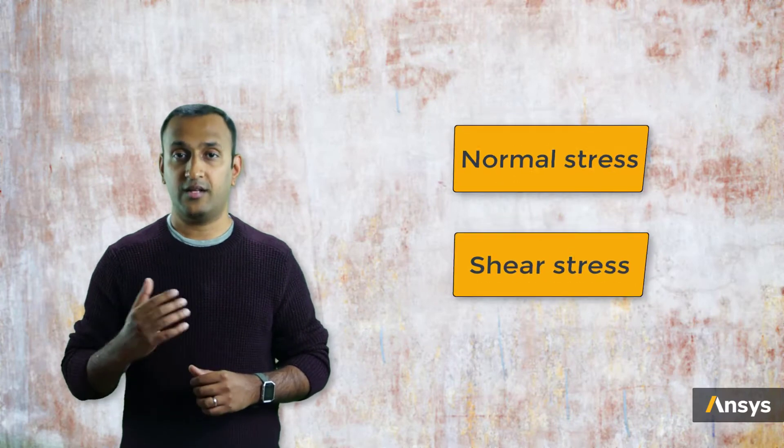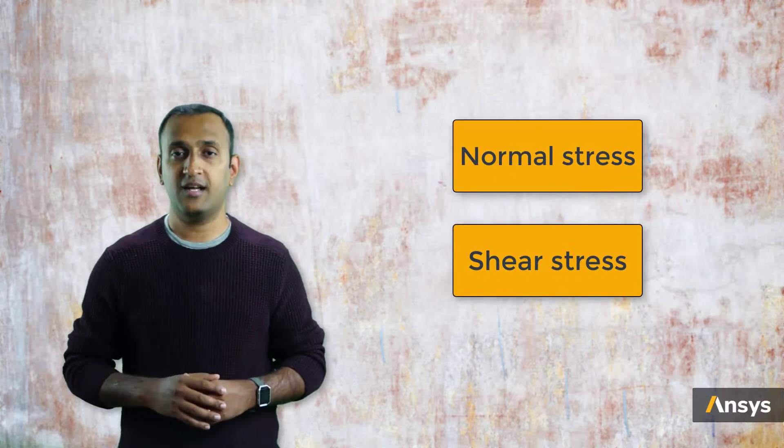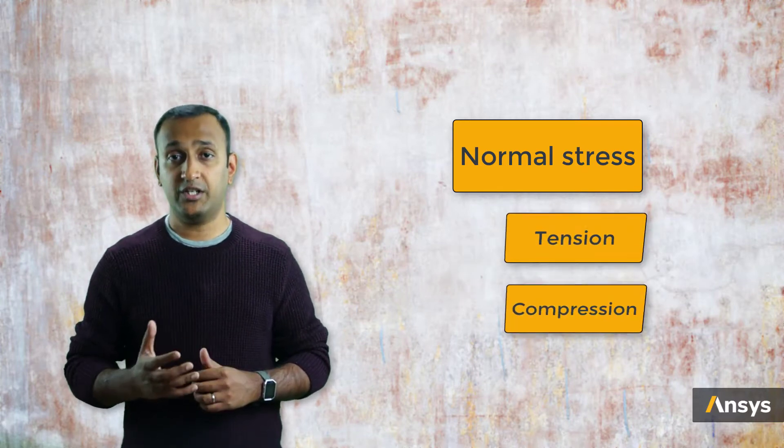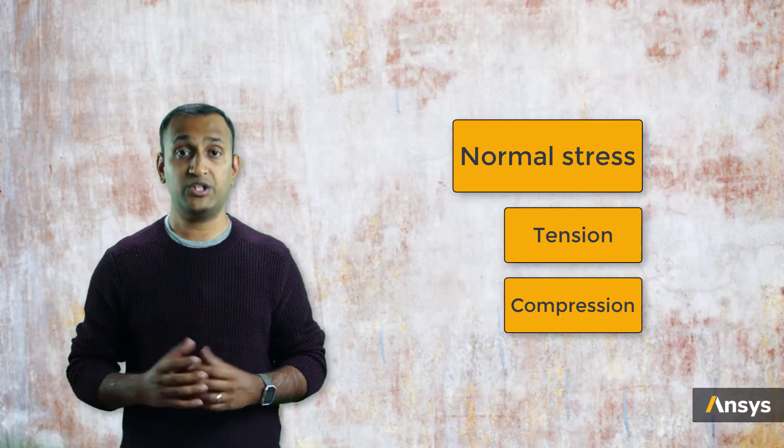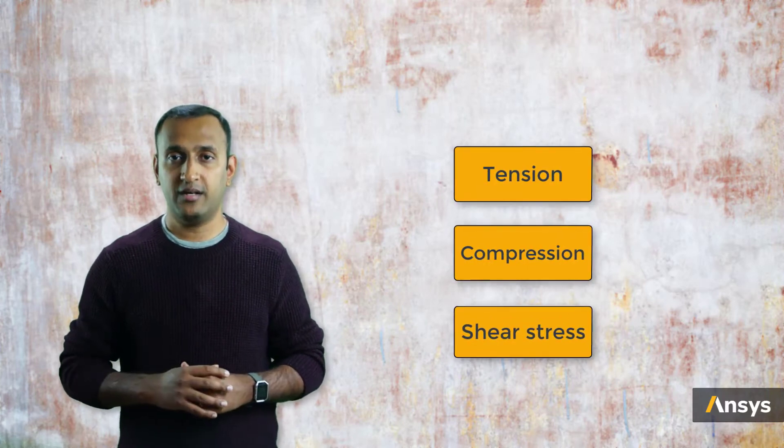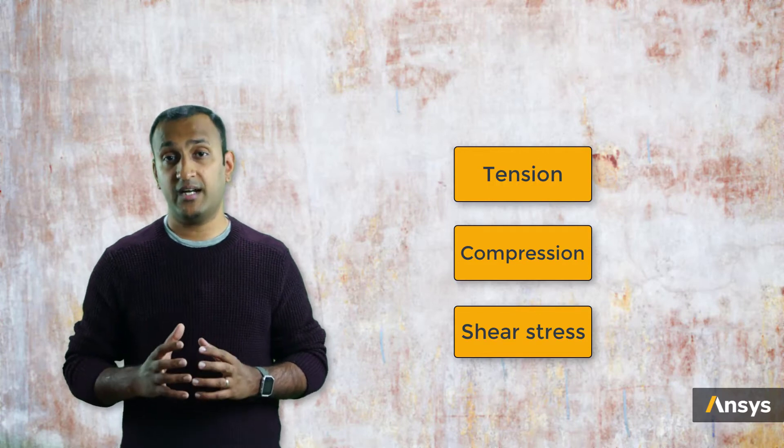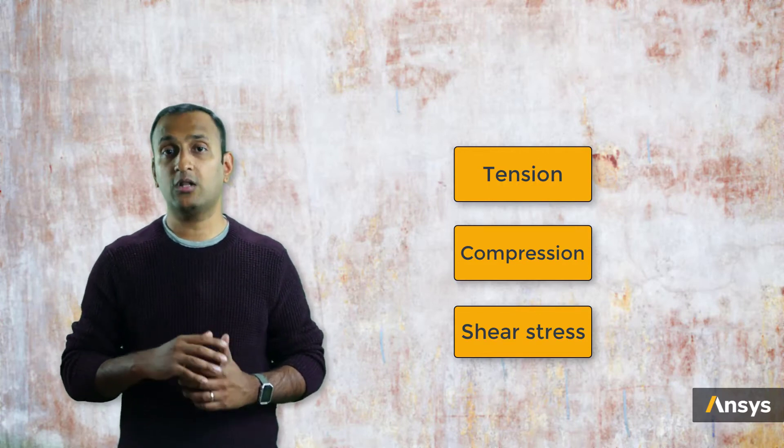Before we see how this is extended to hyperelastic materials, let's do a quick review of the stress tensor. The stress tensor of a material has two types of stresses: the normal and the shear stresses. In case of normal stress, the material could be either undergoing tension or compression, which are two different modes of deformation. So overall, there are three modes of deformation seen in the material, and one must understand how the material behaves in all three modes.